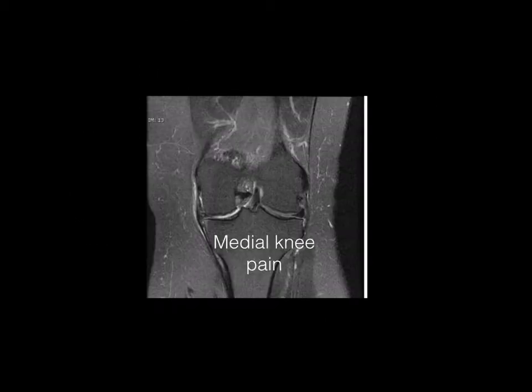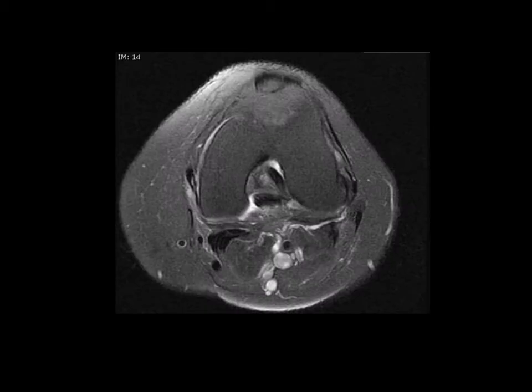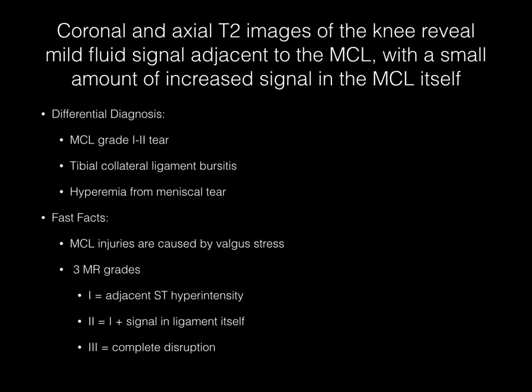Now pause your media player. Coronal and axial T2-weighted images of the knee reveal mild fluid signal adjacent to the MCL with a small amount of increased signal in the MCL itself. The differential diagnosis should include an MCL grade 1 to 2 tear, tibial collateral ligament bursitis, or hyperemia from an associated meniscal tear.